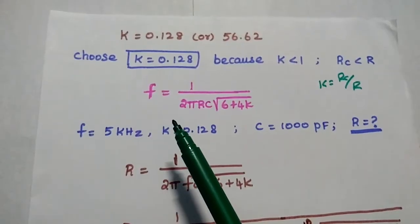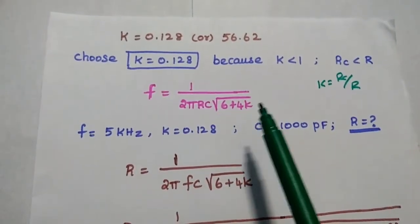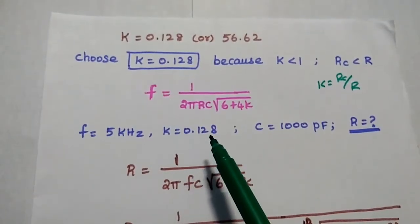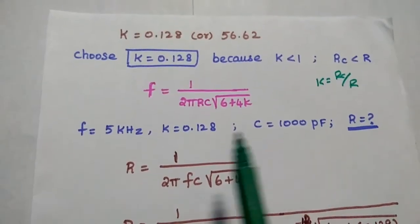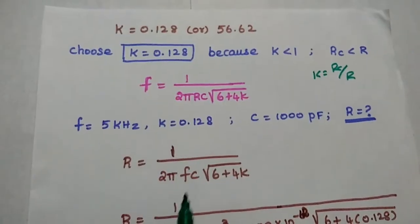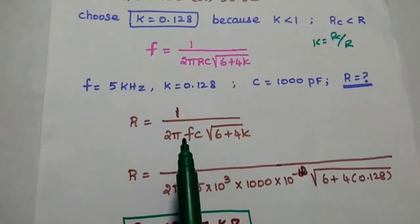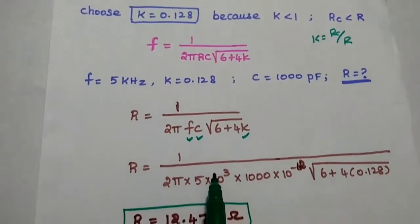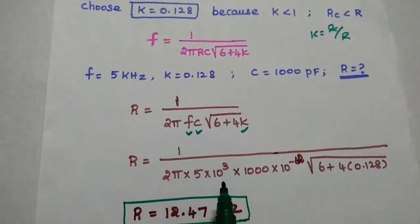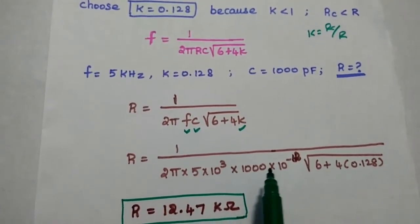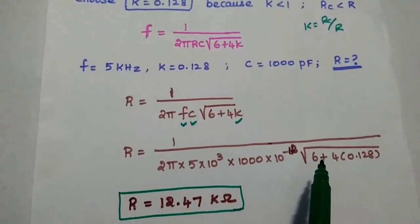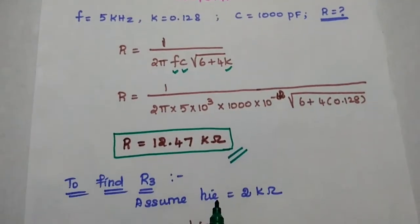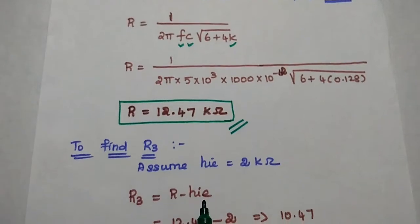Next, we use the formula F = 1 / (2π RC √(6 + 4K)) to find R. Known values: F = 5 kHz, K = 0.128, C = 1000 picofarad. Rearranging: R = 1 / (2π F C √(6 + 4K)). Substituting: R = 1 / (2π × 5×10³ × 10⁻⁹ × √(6 + 4×0.128)), giving R = 12.47 kilo ohm.